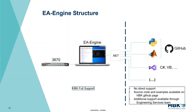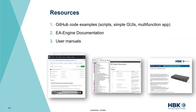Here's a visualization of the EA Engine structure — we have the 3670 DAC communicating with the EA Engine and we're interacting with the API via the .NET framework. Like any good API, there are a number of resources available: code examples published on our HBK World GitHub including basic scripts, simple GUIs, and multi-function apps in a variety of languages. The EA Engine also comes with documentation covering every function, object, and event the API offers, as well as a user manual for the 3670.